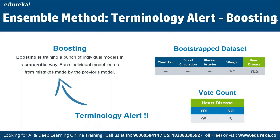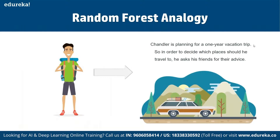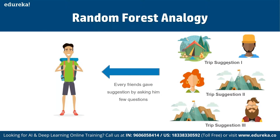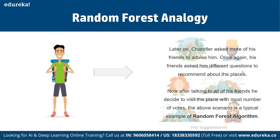Here is a random forest analogy: Chandler is planning a one-year vacation and asks his friends for advice. Each friend suggests different places — one recommends trekking, another hiking — by asking Chandler different questions. After consulting all his friends, Chandler decides to visit the place with the most votes. This scenario is a typical example of the random forest algorithm.